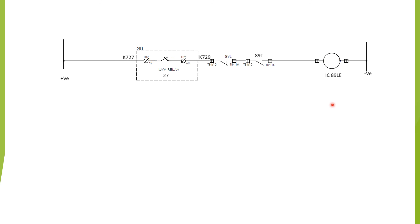Apart from that, there exists a mechanical interlocking between the line earthing switch and 89L. If 89L is closed, we cannot operate the earthing switch mechanically. This is all about the interlocking for the line earthing switch for a feeder.